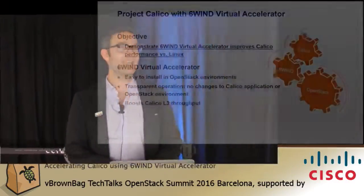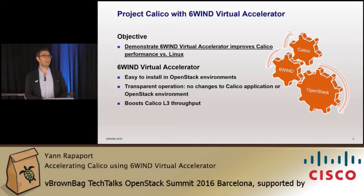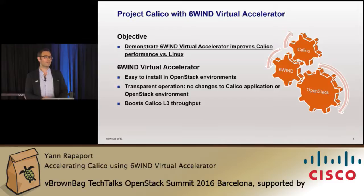For those of you who don't know Calico, Calico provides L3 virtual networking for high-scale data centers. It's an open-source project that uses Linux forwarding and BGP for connectivity to, from, and between VMs.